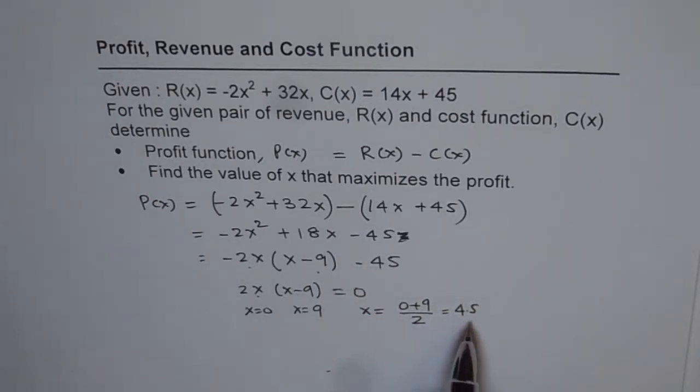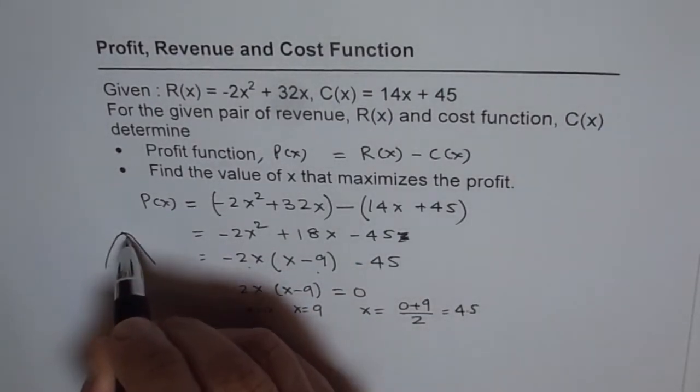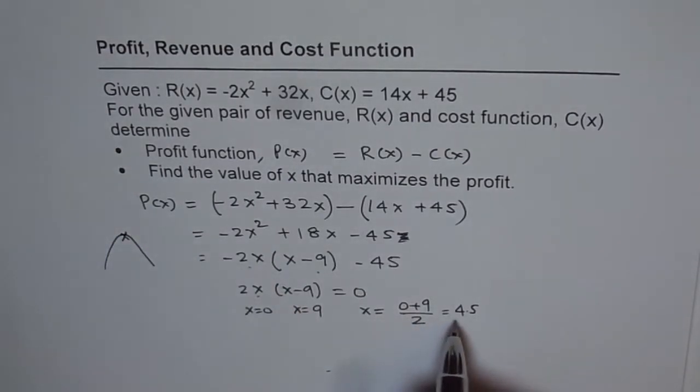Now, why is it maximum? Since you have -2x², so that means the parabola is opening downwards, and therefore, we have a maximum for x equals to 4.5.